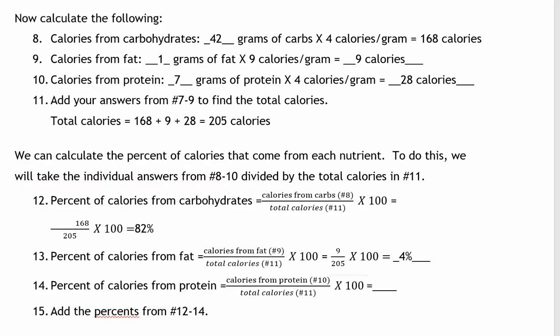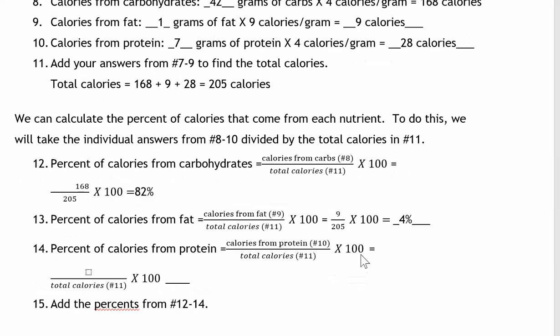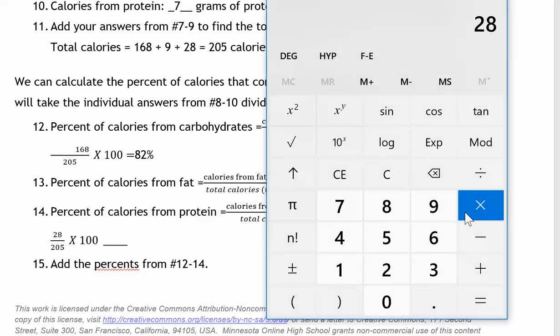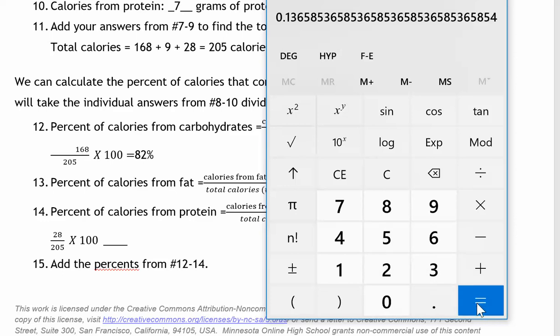Finally, we're going to find the percent of calories from protein. We'll take the number of calories from protein from number 10, divide it by the total calories in number 11. Looking at number 10, I see that we had 28 calories from protein. I'm going to divide that by my total calories, 205. 28 divided by 205 equals 0.136585. Change it to a percent by multiplying by 100 to move the decimal two places to the right. So 13.658%. I'm going to round to the nearest whole number, which is 14%.